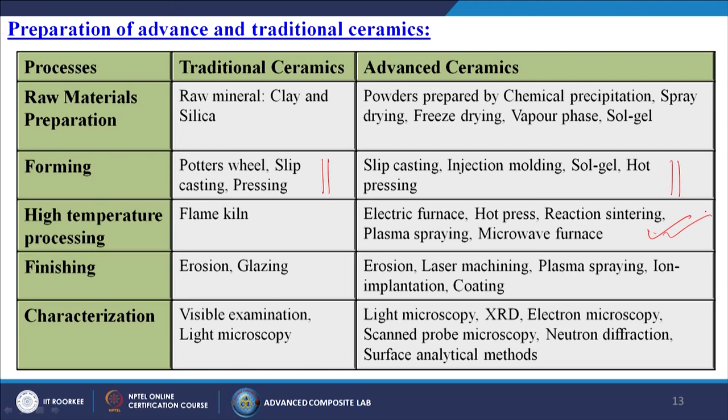For finishing, traditional ceramics use erosion or glazing methods, while advanced ceramics use erosion, laser machining, plasma spraying, and ion implantation. For characterisation, traditional ceramics use visible examination or light microscopy, whereas advanced ceramics use light microscopy, XRD, electron microscopy, scanning probe microscopy, neutron diffraction, and surface analytical methods — reflecting the broad use of advanced technology for preparing and characterising advanced ceramic materials.